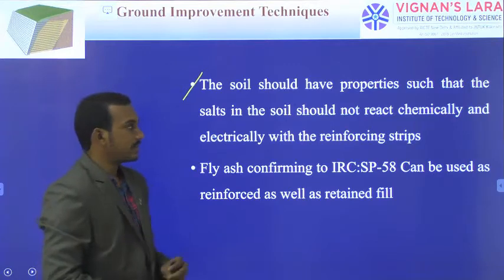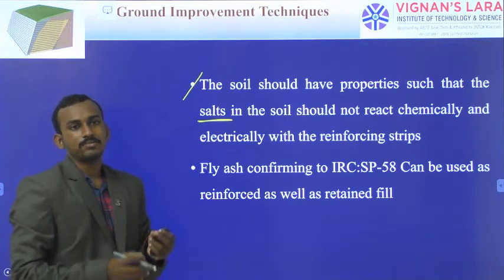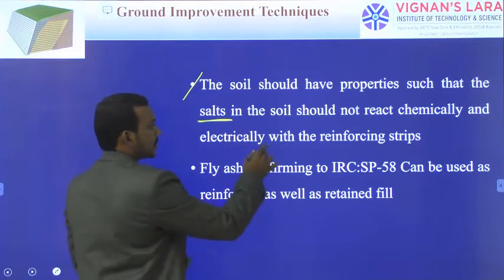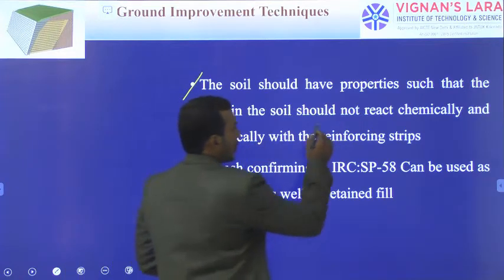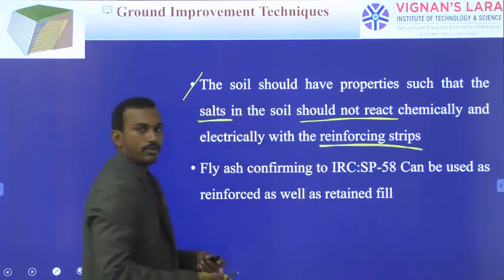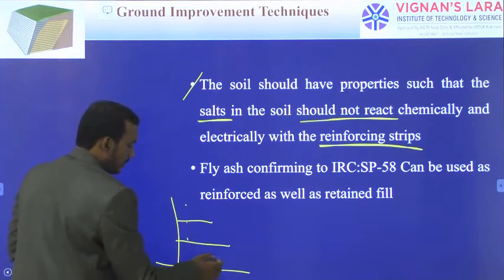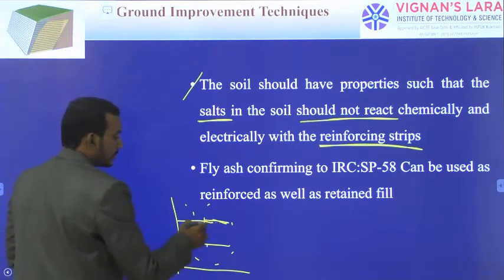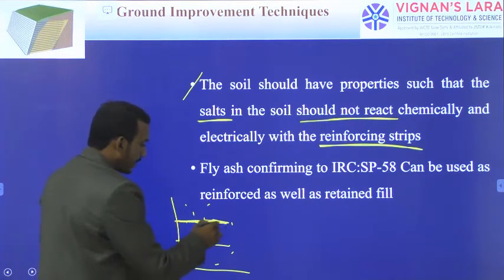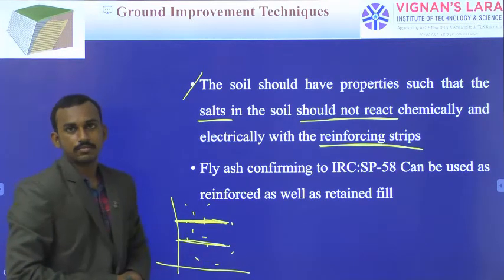The soil should have properties such that the salts in the soil should not react chemically or electrically with the reinforcing elements. For example, if the soil contains certain chemicals, the soil may chemically or electrically react with the reinforcing elements, which may result in failure of those reinforcing elements.